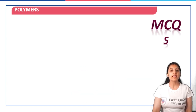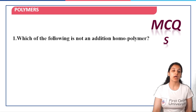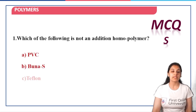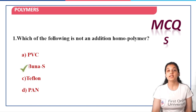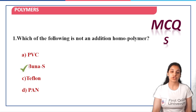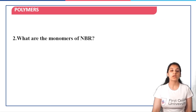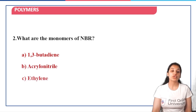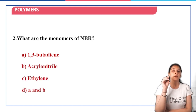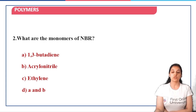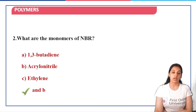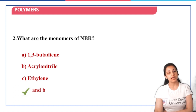Now based on this, let's quickly look at a few MCQs. Which of the following is NOT an addition homopolymer — PVC, Buna-S, Teflon, or PAN? It is Buna-S, because it is a hetero addition polymer (copolymer). Option B is the correct answer. Next question: what are the monomers of NBR? As already mentioned, you need to know the monomers of Buna-N and Buna-S. The answer is 1,3-butadiene and acrylonitrile — option D is the correct answer.